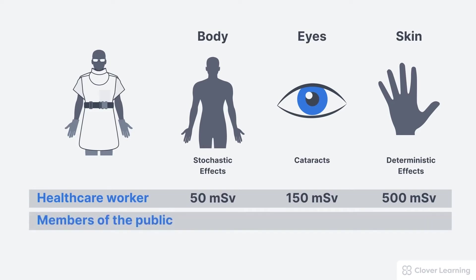For members of the public, the dose limits are all 10% of the occupational dose limit. So the annual effective dose limit for members of the public is 5 millisieverts for the whole body. The annual lens dose limit for members of the public is 15 millisieverts, and the annual dose limit for the skin and extremities is 50 millisieverts.